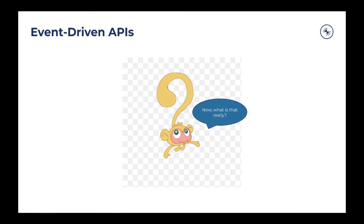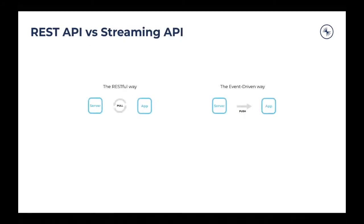What exactly do you think event-driven APIs are? How is it different from APIs that we typically use from applications or services where we send in a request and get back a response? We'll try to level set and understand what's the definition of an event-driven API and go forward from there.